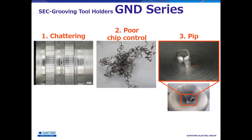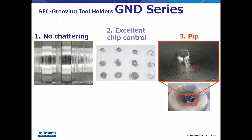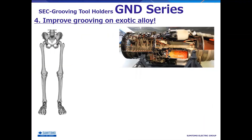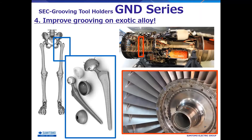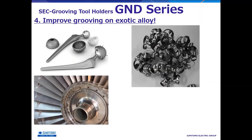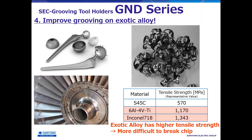In addition to solving the problems described so far — chattering, chip control, and PIP formation — GND can also be applied to machining of exotic materials used in medical and aerospace applications. Chips of exotic materials such as titanium alloys and heat-resistant alloys are more difficult to control than steel, because the material has high tensile strength and the chip is hard to break.